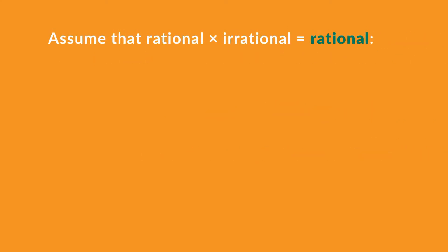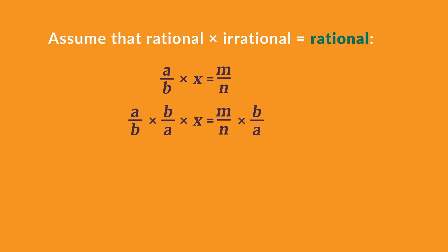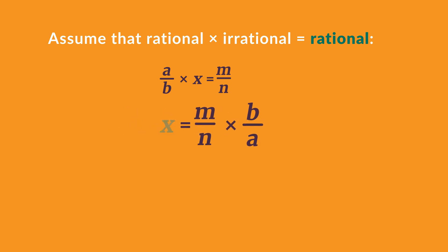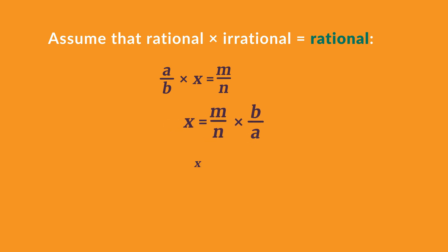Let's assume the opposite: that a rational number, which we express as a fraction a over b, multiplied by an irrational number x, gives a rational answer, which we represent as m over n. We manipulate this equation by multiplying b over a on both sides, and get x equals m over n times b over a, which gives us the fraction mb over na on the right-hand side.